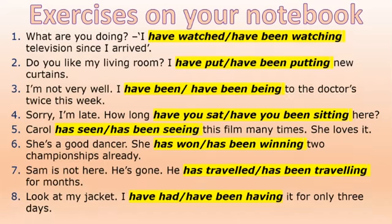Now on your notebook you have eight sentences. You need to select the right tense — present perfect simple or present perfect continuous. Number one: 'I've watched' or 'I have been watching television since I arrived.' Number two: 'I have bought new curtains' or 'I have been putting new curtains.' Number three: 'I have been to the doctors twice this week' or 'I have been being to the doctors twice this week.' Number four: 'How long have you sat here' or 'how long have you been sitting here.' Number five: 'Carol has seen this film many times, she loves it' or 'Carol has been seeing this film many times and she loves it.'